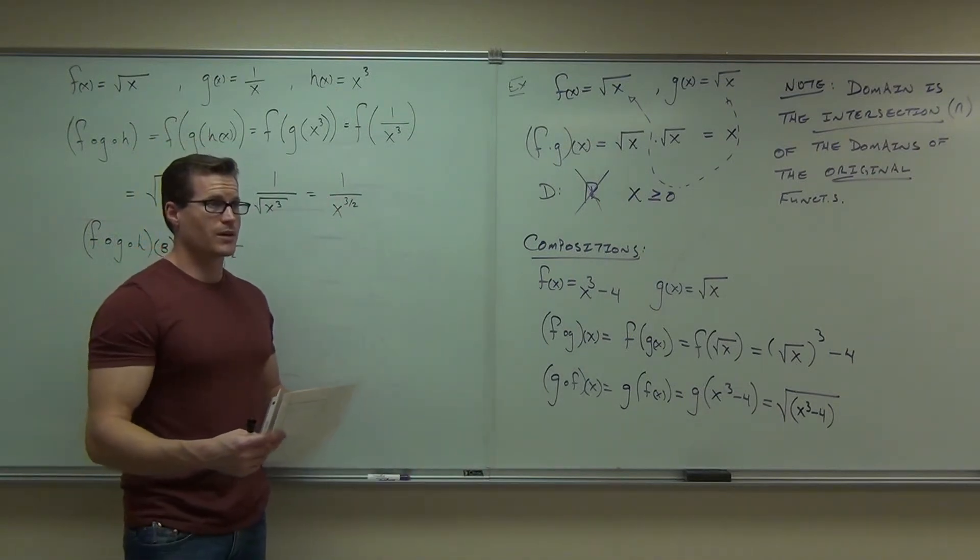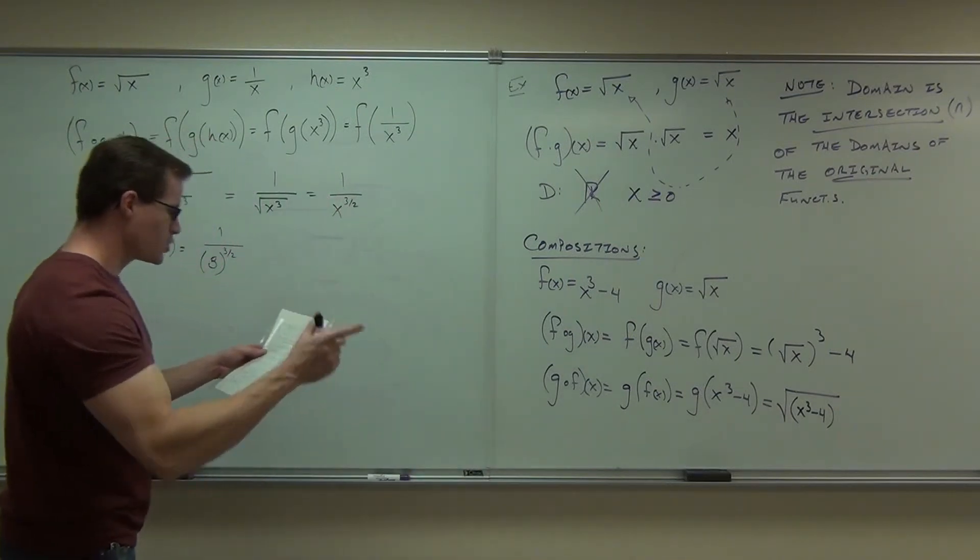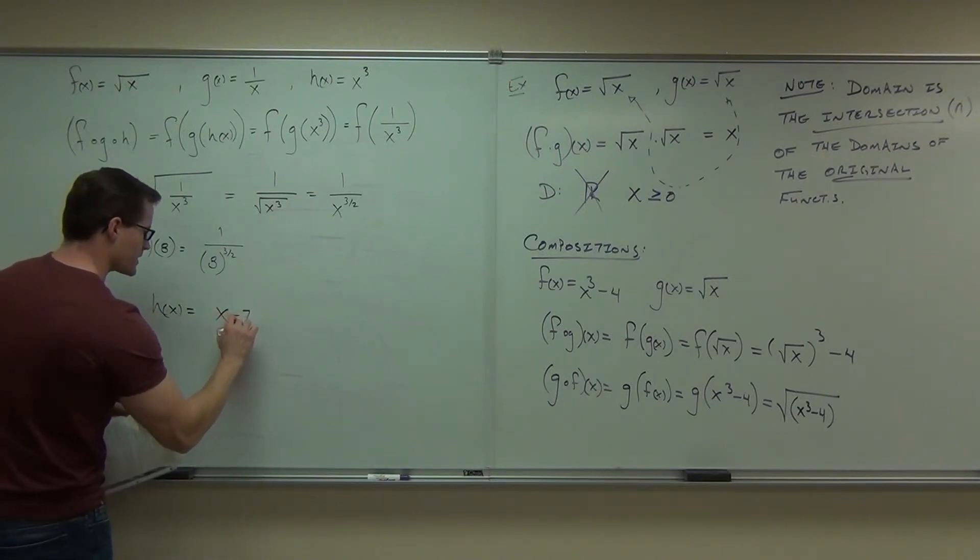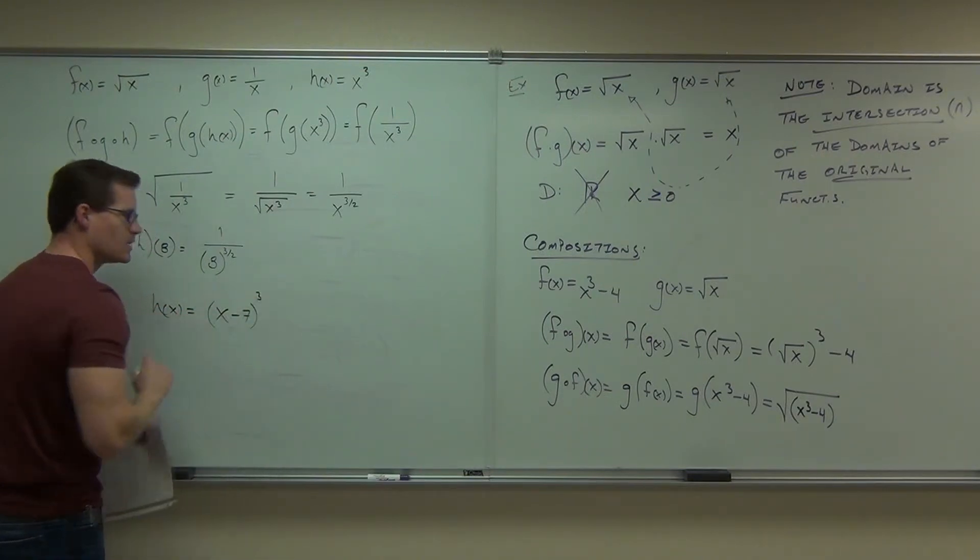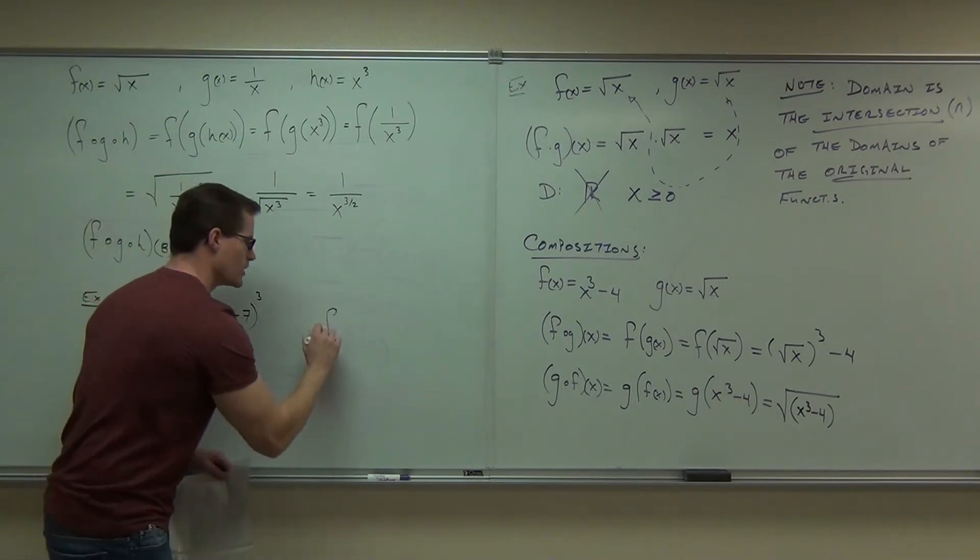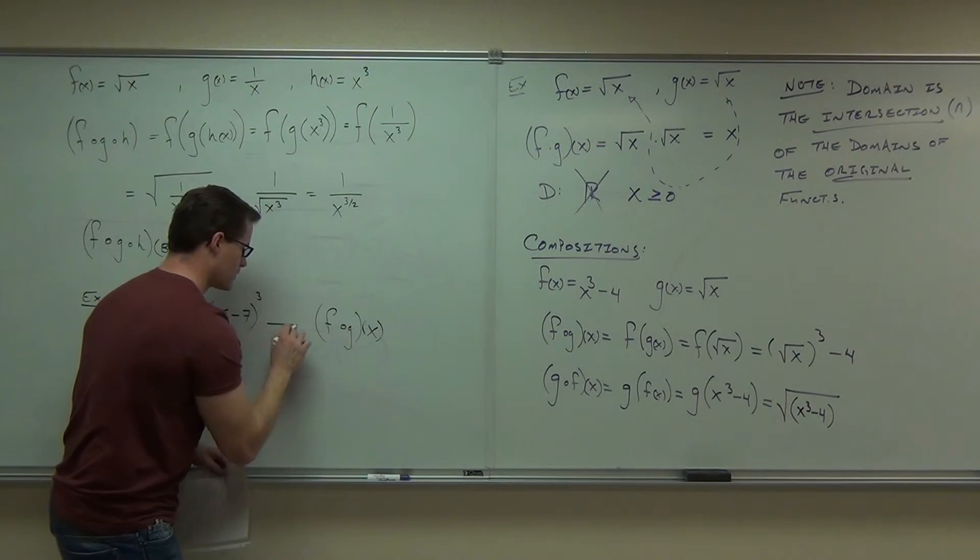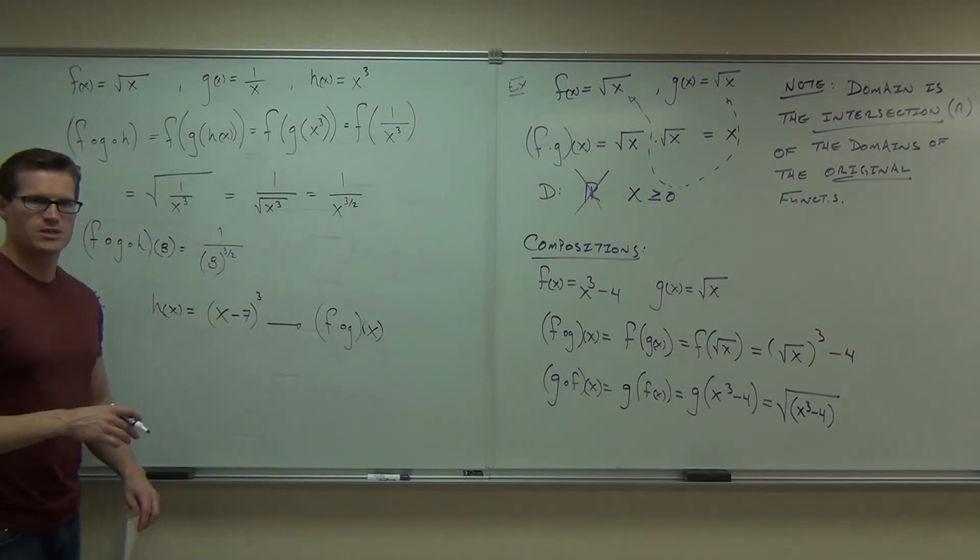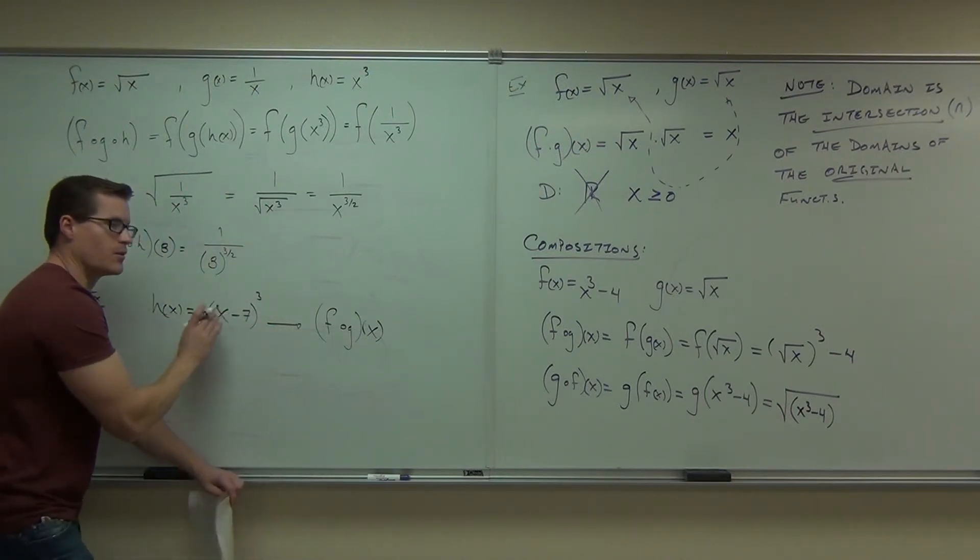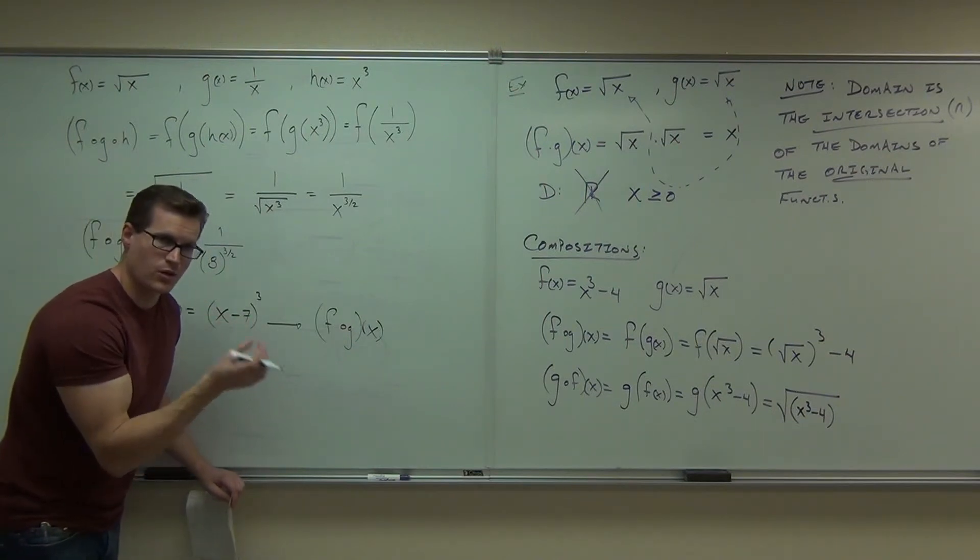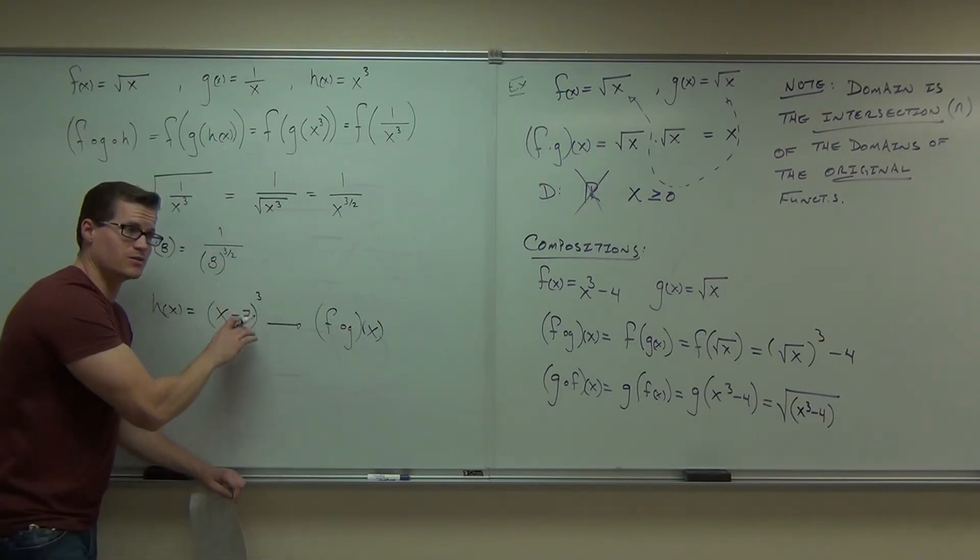The last thing we're going to talk about... Oh, we have 30 seconds. Perfect. You should be able to also go backwards. In other words, for instance, if I had given you something like H of X equals X minus 7 cubed, can you write that as a composition F of G of X? Can you write that as a composition? For instance, can you define the inside part as one function, the outside part as another function, and write it appropriately so that when you compose them, it gives you that.